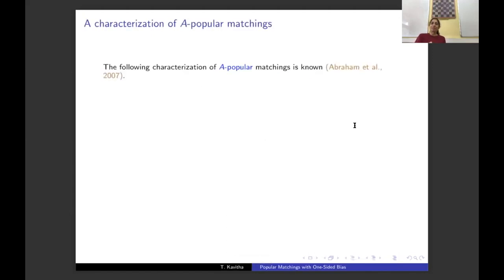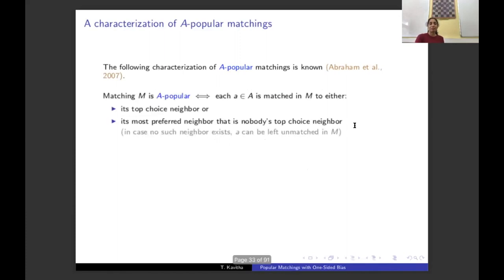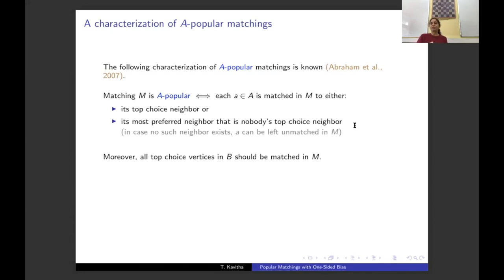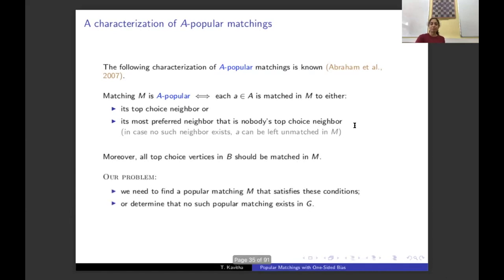A-popular matchings have a clean characterization: a matching is A-popular if and only if every vertex in A is matched to either its top choice neighbor or its most preferred neighbor that is nobody's top choice neighbor. Also, all top-choice vertices in B must be matched in any A-popular matching. So our goal is to find a popular matching in G that contains only such edges, or decide that no such popular matching exists in G.